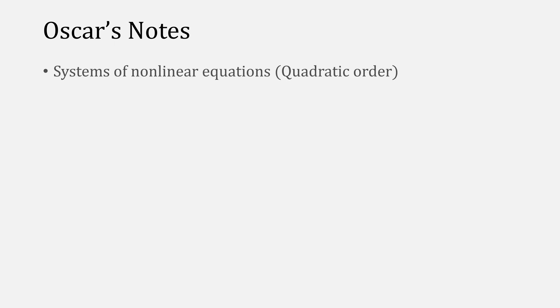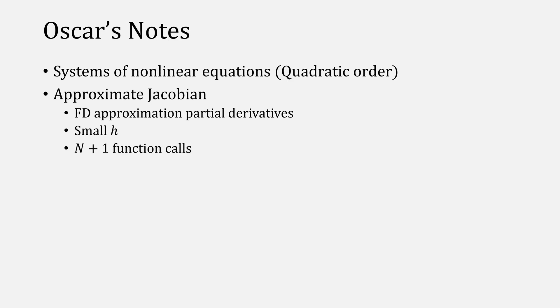Important notes from this video are that we can approximate the solutions to systems of nonlinear equations with a quadratic order by approximating the Jacobian using finite differences. With the small value for h, it's much more accurate, and it does require a lot of function calls to compute this, but it is better than Stephenson's method when h is small.